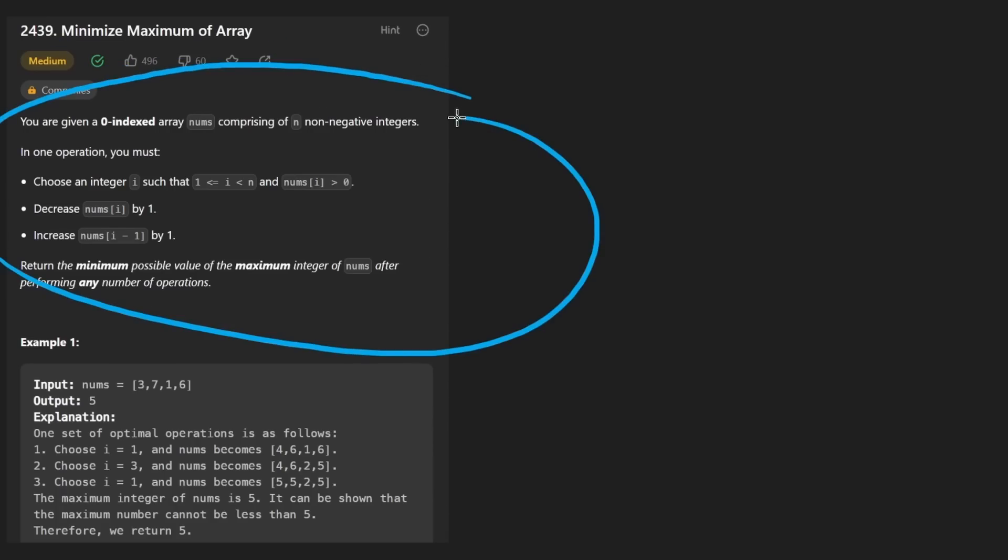This is a pretty tricky problem, especially for a medium. If you couldn't solve it, definitely don't get discouraged. We're given a zero indexed array where every integer is going to be non-negative. So basically zero or greater than zero.